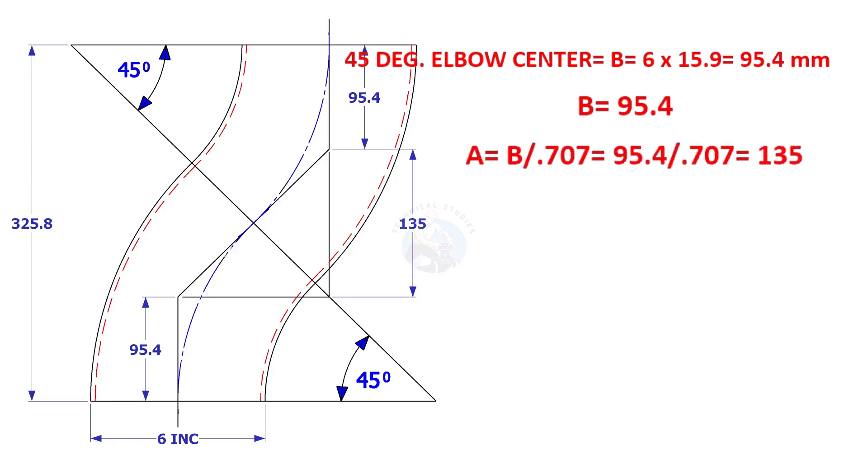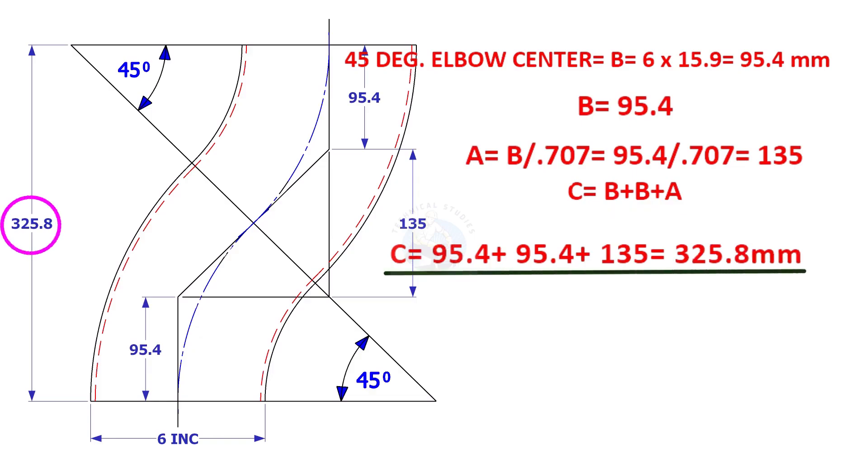A is B divided by 0.707, which is 135 millimeters. C is equal to 2B plus A, which equals 325.8 millimeters.